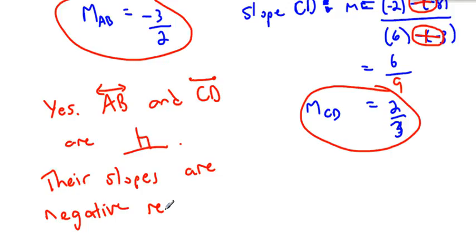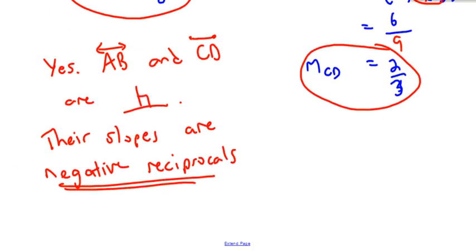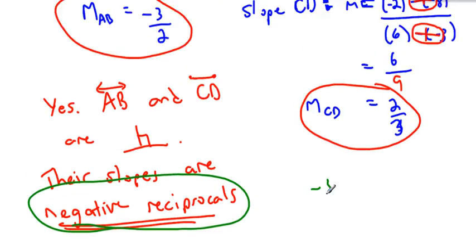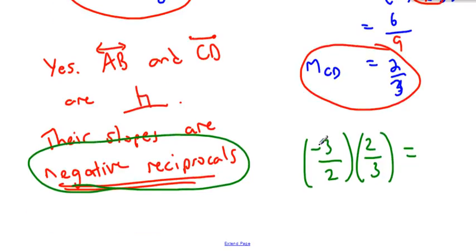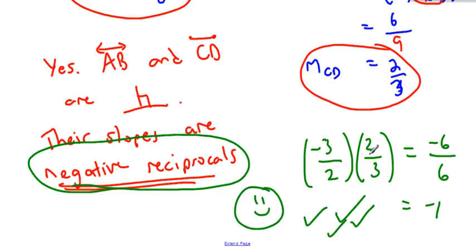Now hold on a sec. If two values are negative reciprocals, it means that they must multiply to give negative one. So negative reciprocals will always multiply to give negative one. So if I take the first slope and I multiply it with the second slope, if I get negative one, then I know they're negative reciprocals. So negative three times two is negative six. Two times three is six. And that's negative one. So therefore they're perpendicular. So that's another way of thinking about perpendicular. Two values represent perpendicular slopes if you multiply them together to get negative one.